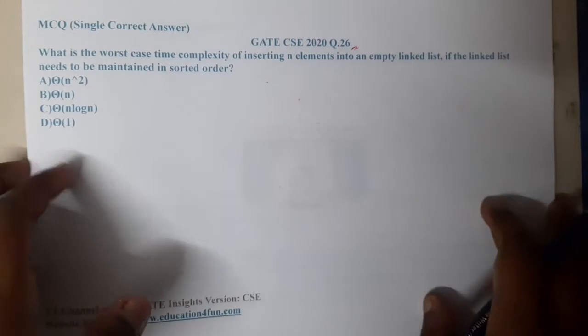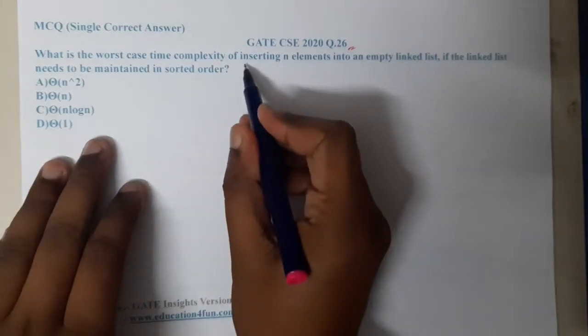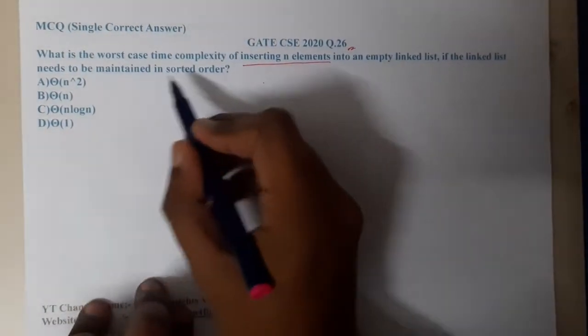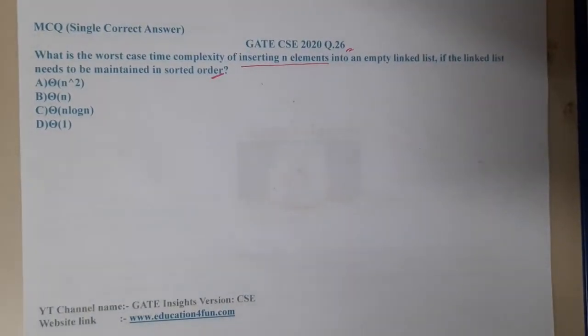What is the worst time complexity of insertion of n elements into an empty linked list if the linked list needed to be maintained in a sorted order? What is the worst time complexity for any type of sorting? It is nothing but n square.